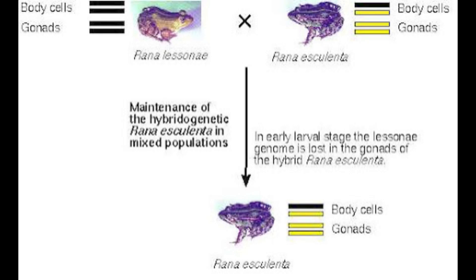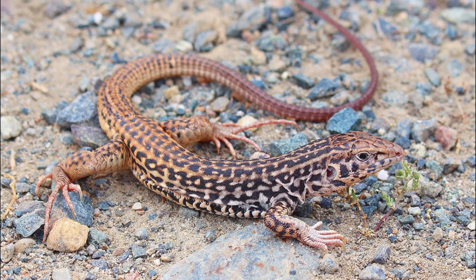And then there's hybridogenesis, which is extremely odd. When two species hybridize, the genetic material donated by the sperm is completely discarded. This is known to occur in hybrids of the marsh frog, Pelophylax esculenta and Pelophylax ridibunda. Despite the abundance of asexual eukaryotes and the variety of their means of asexuality, there is a common theme: asexuality tends to be restricted to individual species or a handful of species within a genus.